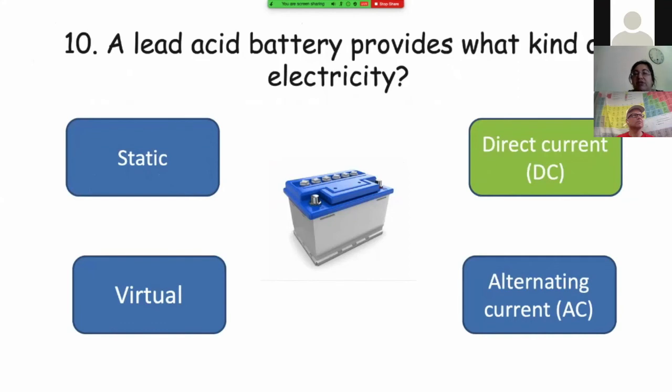A lead acid battery provides DC direct current electricity. The alternating current electricity is the electricity that you have at home. When you plug your, for example, your electric kettle, you are using alternating current. But a lead acid battery, it provides direct current electricity.